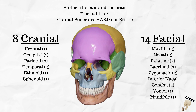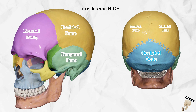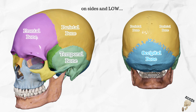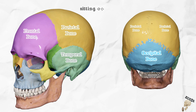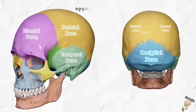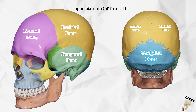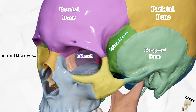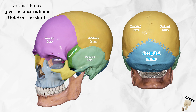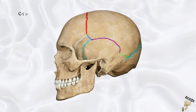...are hard, not brittle. On the sides and high are parietal bones, and on the sides and low are temporal bones. Sitting on the front is the frontal bone, and on the opposite side is occipital bone. Behind the eyes is the sphenoid bone, and behind the nose is the ethmoid bone. Cranial bones give the brain a home. Cranial bones got 8 on the skull.